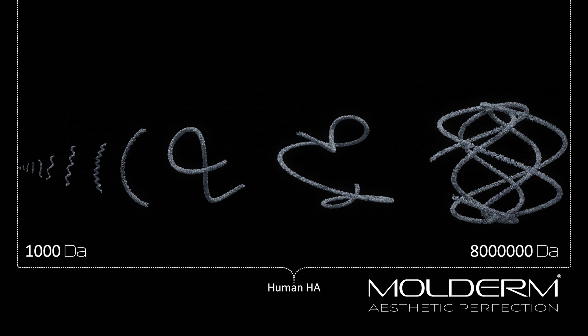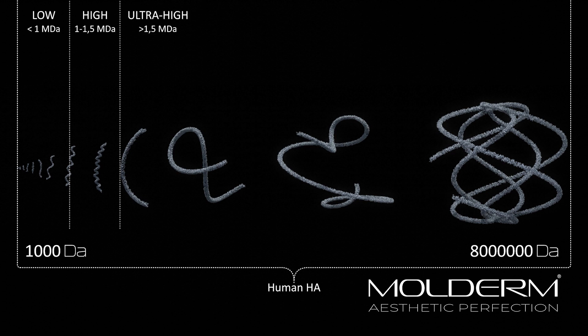The molecule sizes can be divided into low, high, and ultra-high molecular weight. Traditional fillers have, for the past 30 years, been in the spectrum of around 1 million to 1.5 million Daltons. As of late, we've started to see fillers stretching into the lower regions of ultra-high molecular weight.